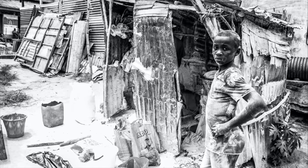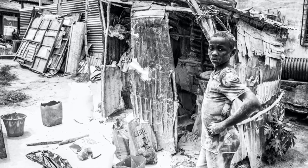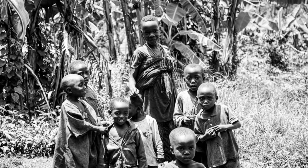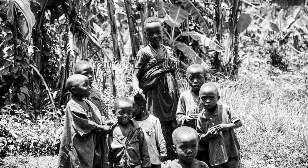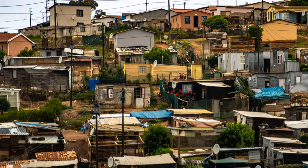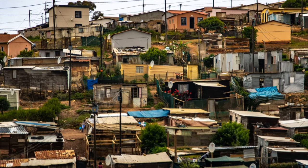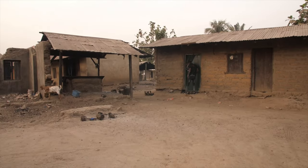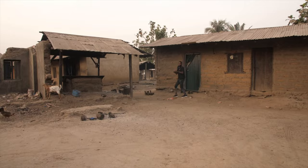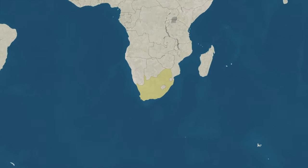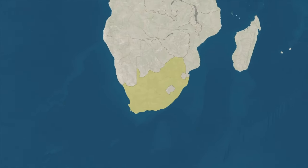However, urban planning during this period often segregated European settler populations from African communities, leading to stark disparities in access to services and amenities.